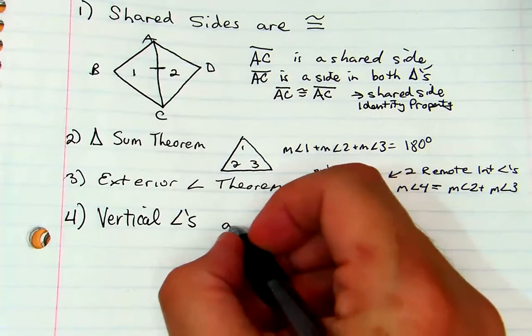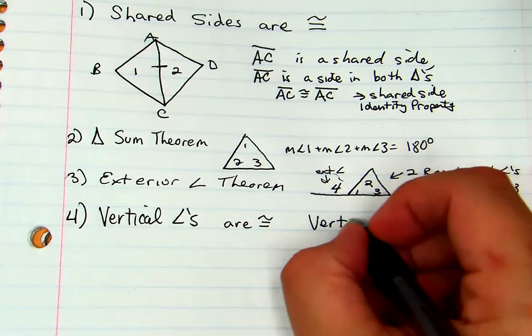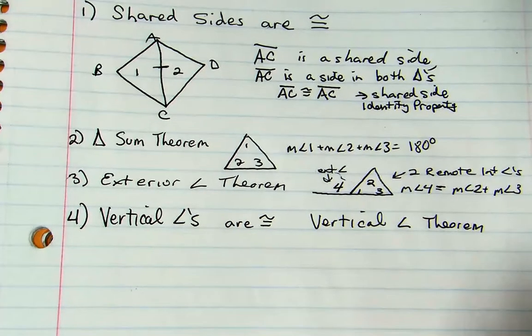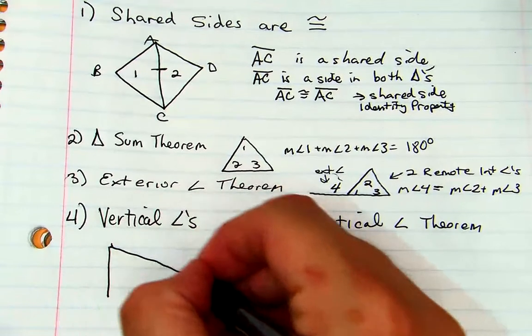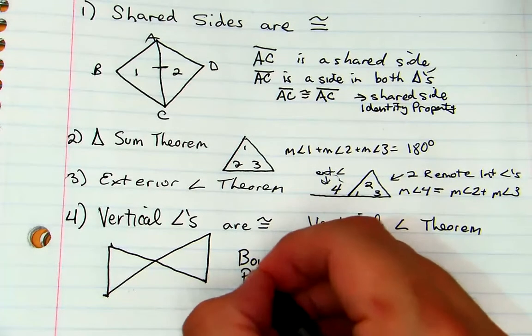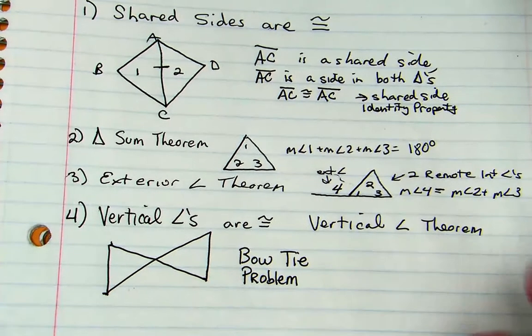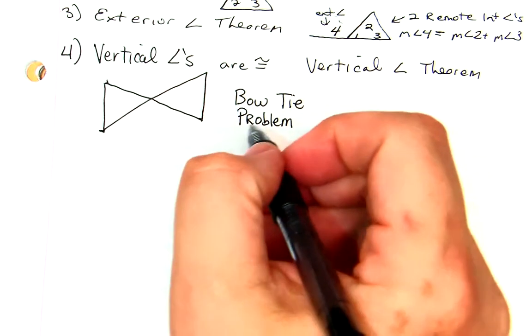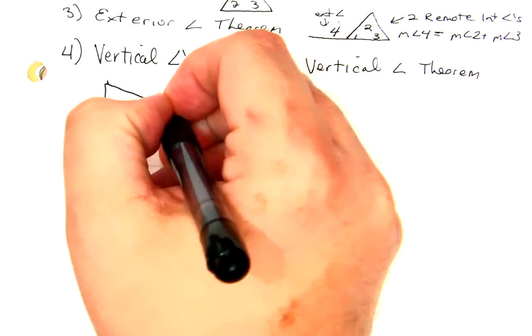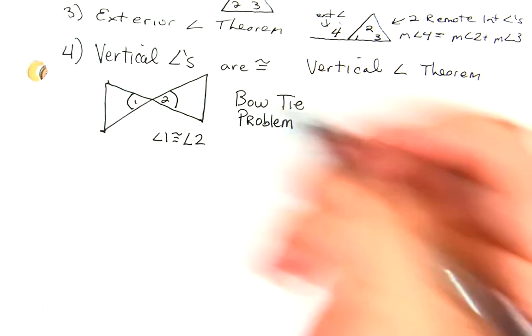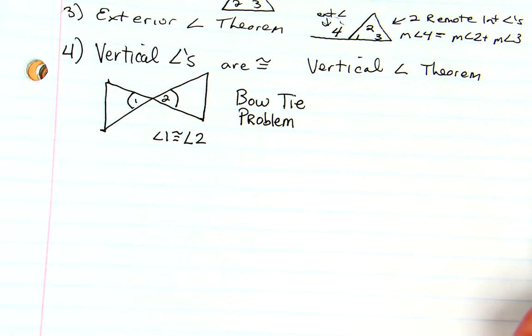Fourth thing. Vertical angles are congruent by the vertical angle theorem. So a lot of times I call this a bowtie problem. And that's just something I kind of think about because as soon as you get a bowtie or something that looks like a bowtie. As soon as you see that you have a bowtie, angles one and two here, angle one is congruent to angle two, instantaneously. So that's another thing that's going to help you out.